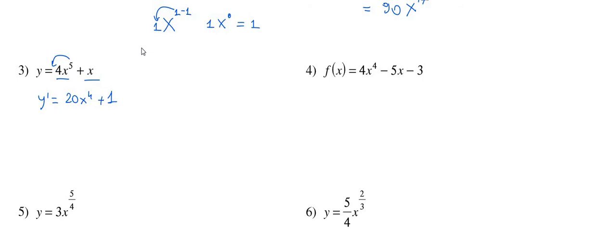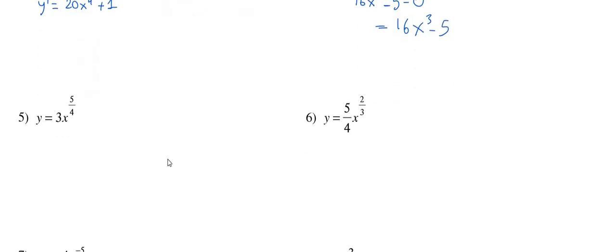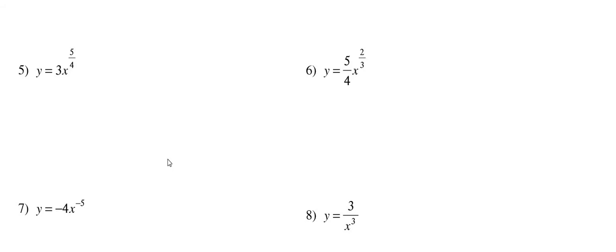Example 4 is again sum or difference rule with power rule: 4 times 4 is 16, 4 minus 1 is 3, giving 16x cubed. Derivative of 5x is 5 and derivative of 3 is 0, so the result is 16x cubed minus 5. Example 5: the power is a fraction — bring 3 over 4 to the front, multiply by any constant, subtract 1 from the power expressing 1 as 4 over 4, giving 15 over 4 times x to the one-fourth. If you need radical form, write 15 over 4 times the fourth root of x.